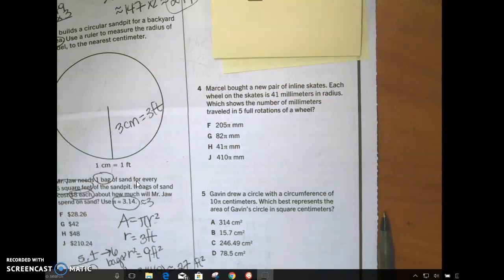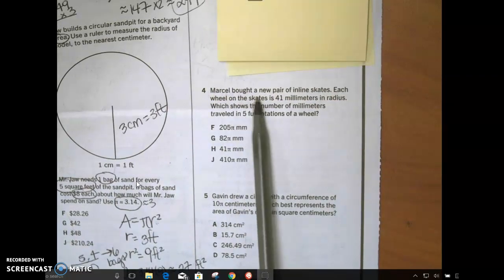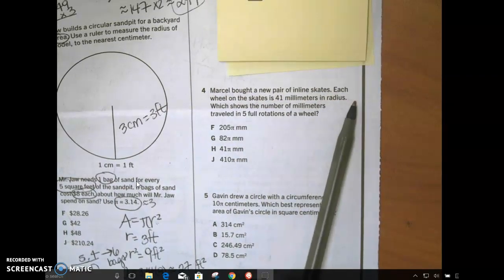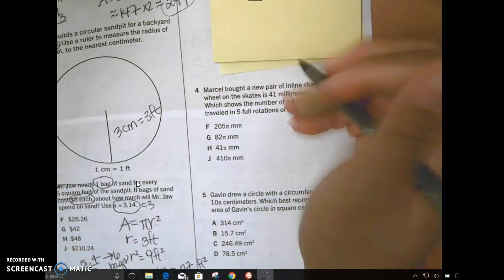I'm glad we went a little bit further. I messed up on 3. That's okay. Fix it, please. Marcel bought a new pair of inline skates. Each wheel on the skates is 41 millimeters in radius.